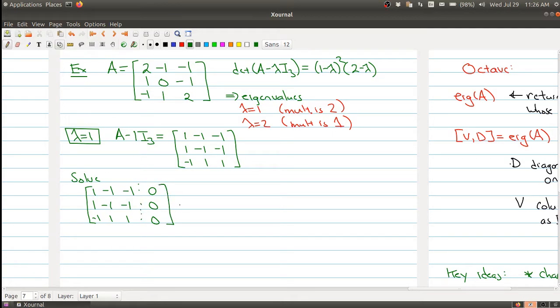There's the augmented form, and you notice that each of the two rows are actually all scalar multiples of the first row. So it reduces to this matrix right here, the row reduced echelon form.